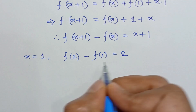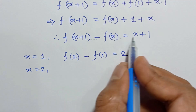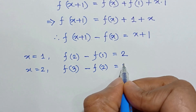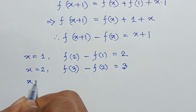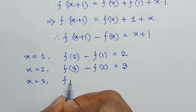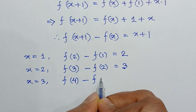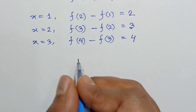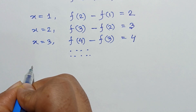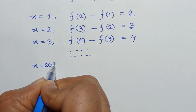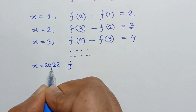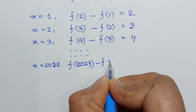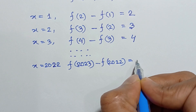Using this recurrence: when x=1, f(2) − f(1) = 2; when x=2, f(3) − f(2) = 3; when x=3, f(4) − f(3) = 4. Continuing up to x=2022: f(2023) − f(2022) = 2023.